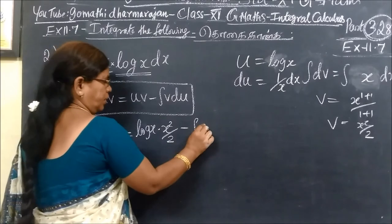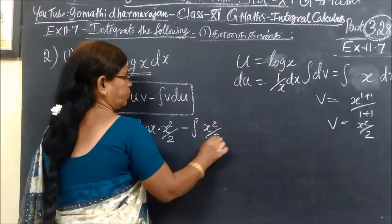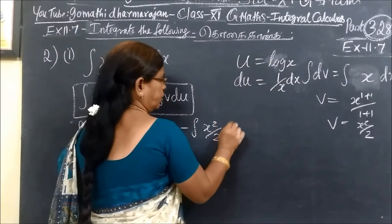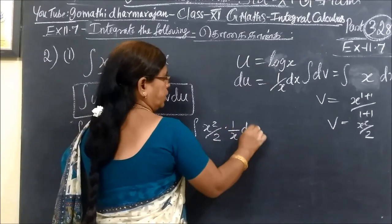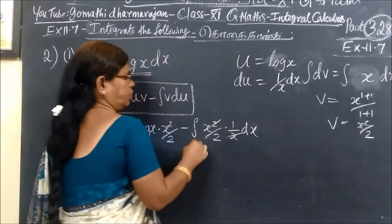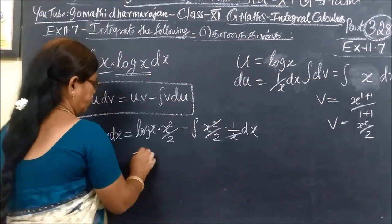Minus integral V dU. V is x squared by 2, then dU is dx over x.